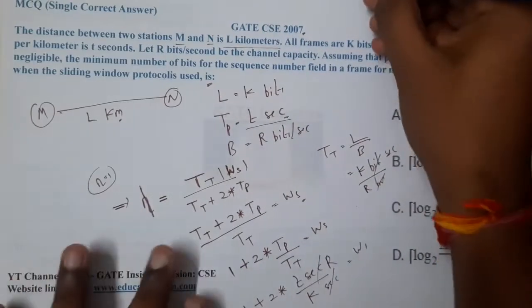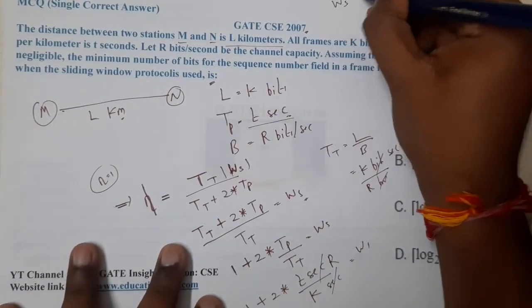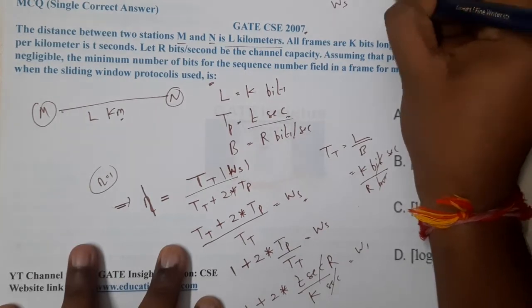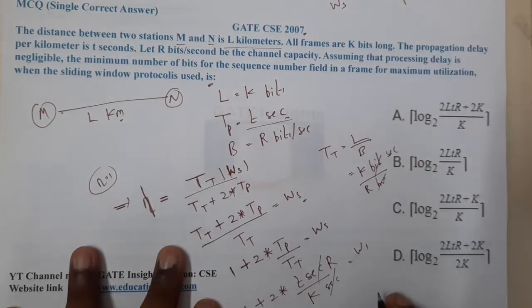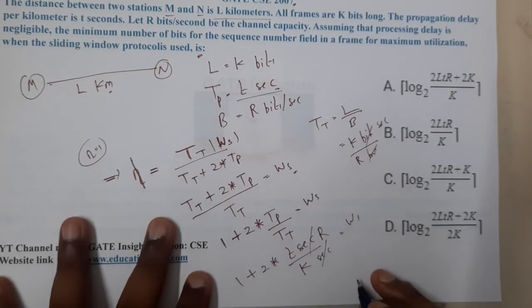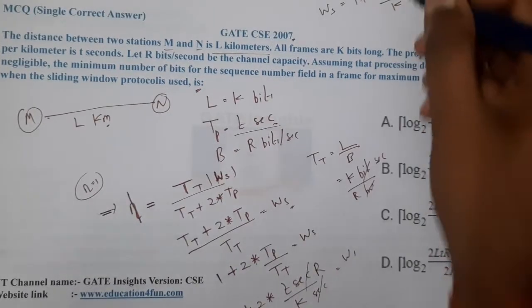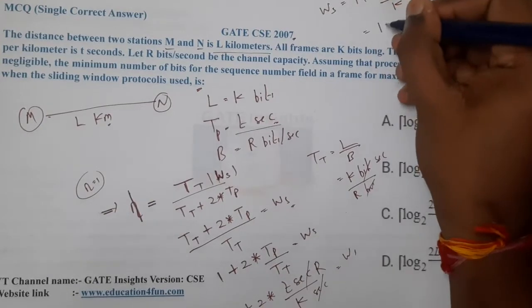At the end we got the window size as - let me write it above - window size equals 1 plus 2TR by K. Is there any option which is matching in this way? I think no option is matching exactly.